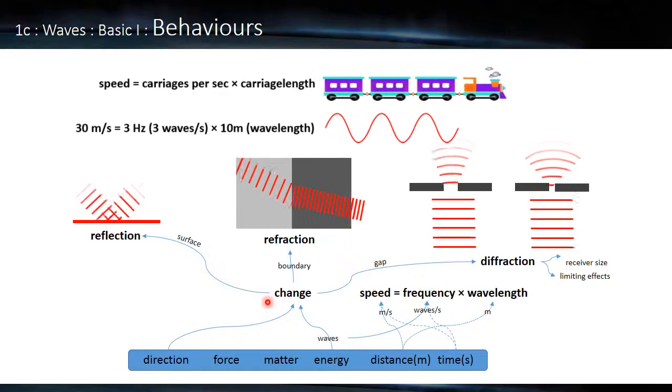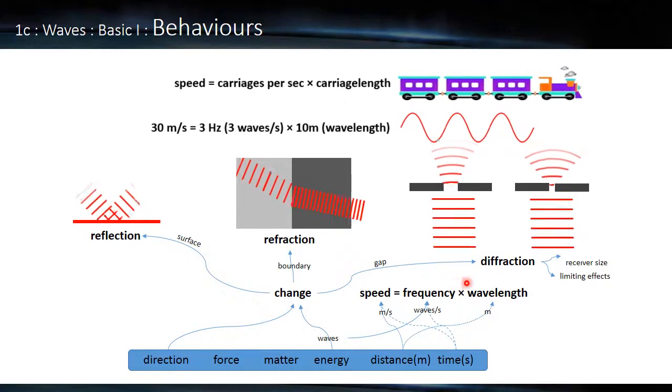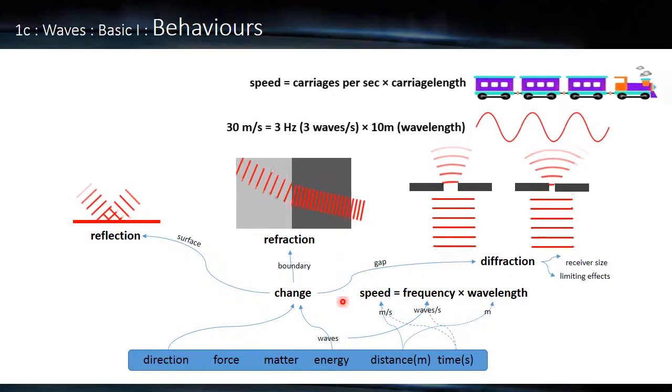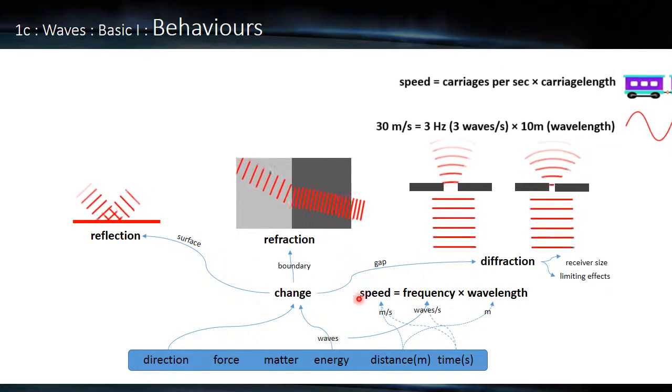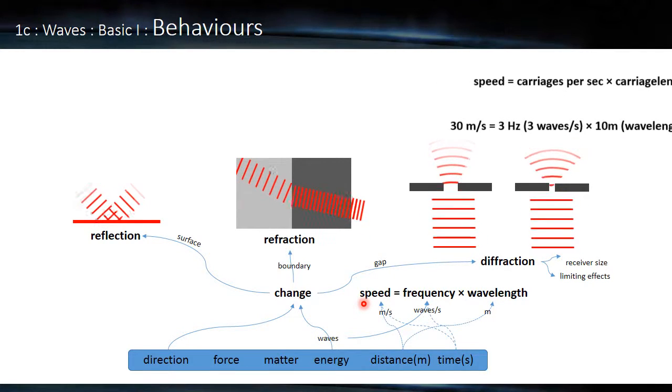So three types of behavior: reflection, refraction, and diffraction. They sound very similar, but we have to make sure we understand the difference. And we also have our equation here, which if we think of the train analogy makes sense. And if we know the number of waves per second, and we know the length of the wave, we can also work out the speed of the wave.